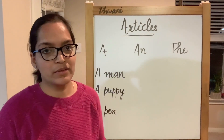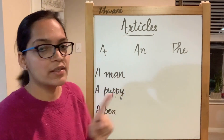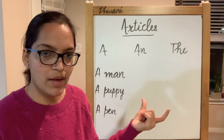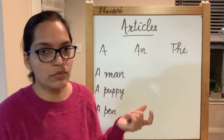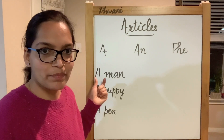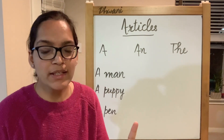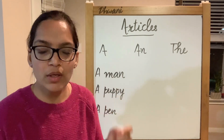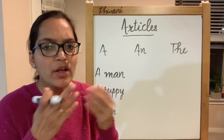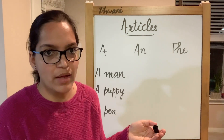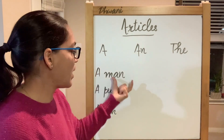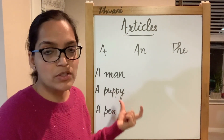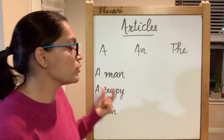A man — we are talking about one single man. 'Man' starts with m, which is a consonant sound, so we use a. It is pointing to a singular noun, it begins with a consonant sound, and we are talking generally about a man. Again, the noun 'puppy' begins with p, which is a consonant sound, so we use a before it.